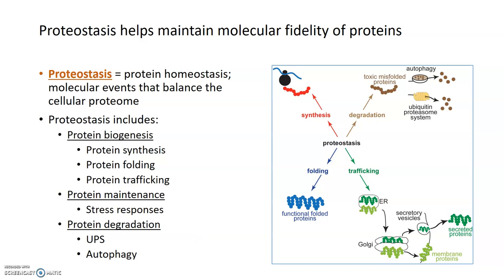Proteostasis, or protein homeostasis, encompasses all of the molecular events that balance the cellular proteome — all the proteins within a cell. When we talk about molecular fidelity in the context of aging, we're mostly referring to proteins. Protein homeostasis helps maintain molecular fidelity at the levels of biogenesis, maintenance, and degradation.